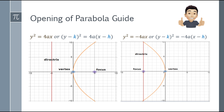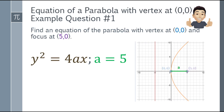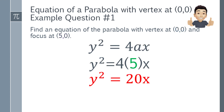Checking our opening guide: positive means pakanan (to the right) — correct. Next, find the value of A or focal length — the distance between the focus and the vertex is 5 units, so A = 5. Now substitute: y² = 4(5)x, which gives us y² = 20x. That is the equation of the parabola with vertex at (0,0) and focus at (5,0).